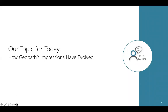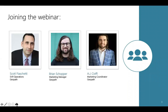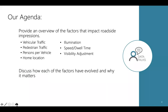One of the key things we want to talk about today is how impressions have evolved over time. With me to do that are Brian Schaffer and AJ Chaffee, who've been along with me from the beginning. The key things we're going to cover are the factors that really play a role in impacting impressions, particularly in roadside — vehicular and pedestrian traffic, persons per vehicle, home location, speed and dwell time, and the visibility adjustment.